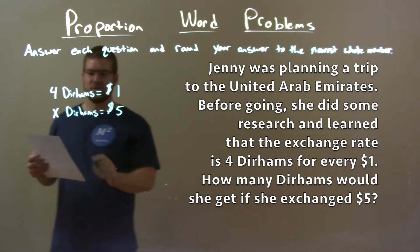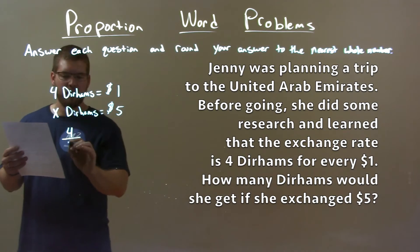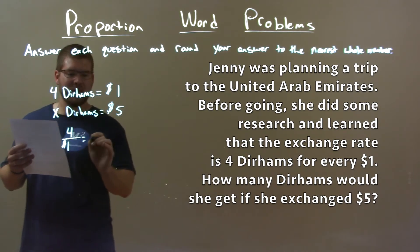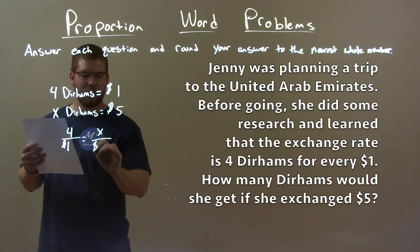Alright. So, let's go set up a proportion. 4 dirhams for every $1 is equal to x dirhams for every $5.